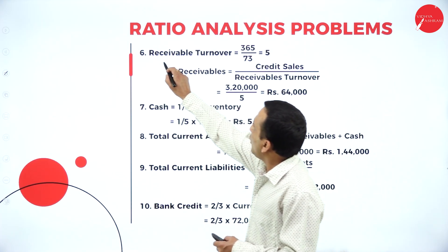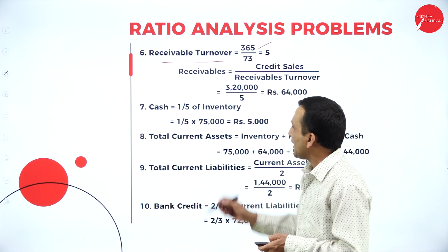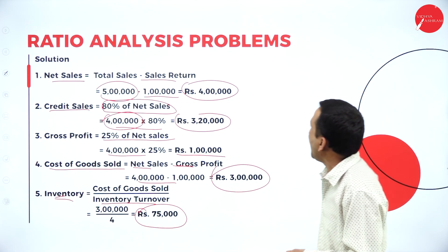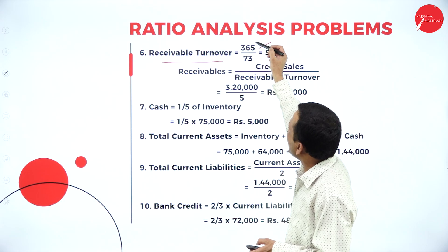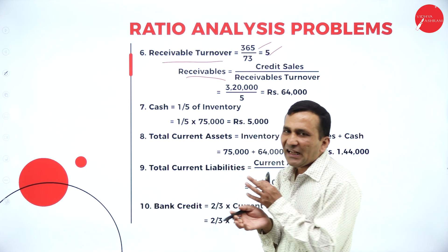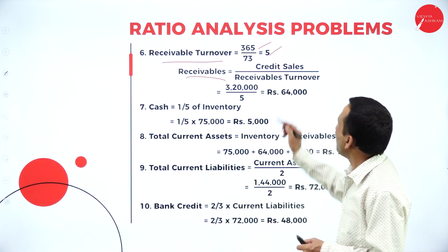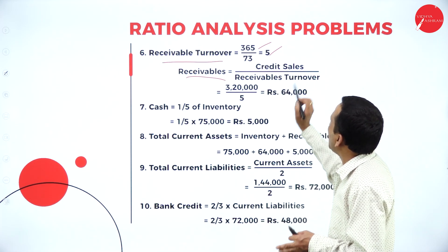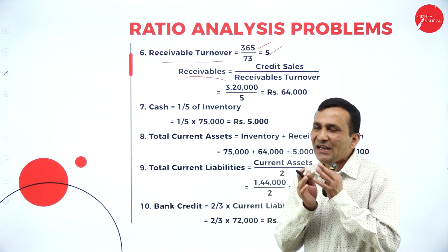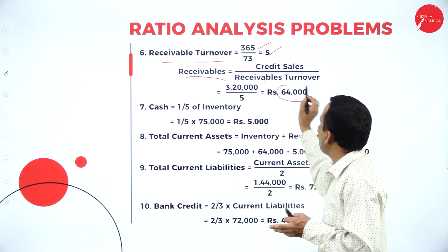Now the receivable turnover — the year has 365 days, and average collection period is 73 days, so receivable turnover is 365 divided by 73, which equals 5 times. Receivables are calculated as credit sales divided by receivable turnover: 3,20,000 divided by 5 gives receivables of 64,000.